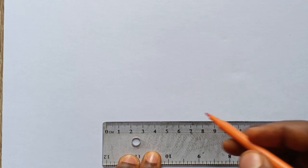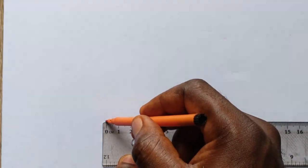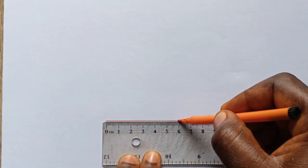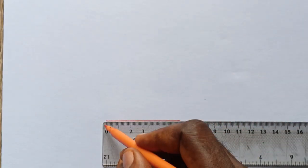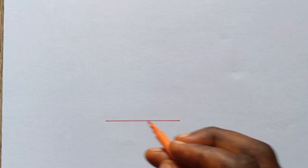The first step is to take a measurement of 6 centimeters. Now draw a straight line, so from this point to this point is your 6 centimeter line.